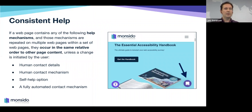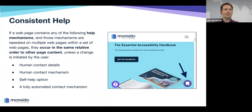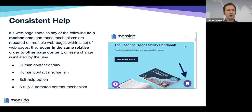The next criterion is Consistent Help. When you have a help functionality — like a live chat or contact information for reaching a person — that help information should appear in the same location across all your pages. For example, if your help chat is in the bottom right of one page, it should be in the bottom right of all your pages so users always know where to find it.